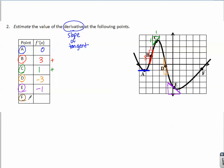And finally, at F. F is tangent line like this. Positive slope, maybe about positive one.